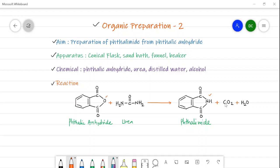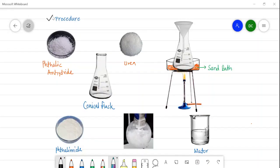Now we will see the procedure of this preparation. In the procedure we have to take phthalic anhydride and urea into the conical flask. So phthalic anhydride about 10 gram and 2 gram urea is taken into the conical flask. They are mixed together and heated on a sand bath for 15 minutes, and a funnel is kept like this on a conical flask, then heating is started.